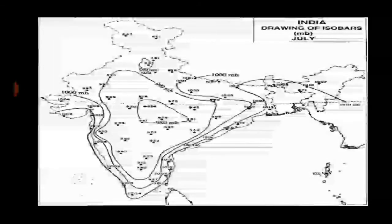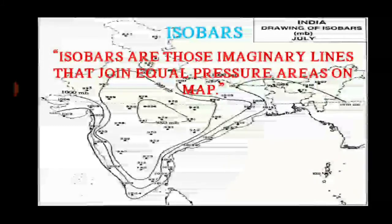Isobars are imaginary lines that join equal pressure areas on a map. The background map shows lines drawn throughout the Indian subcontinent joining equal pressure areas — isobars which may vary from north to south and east to west.